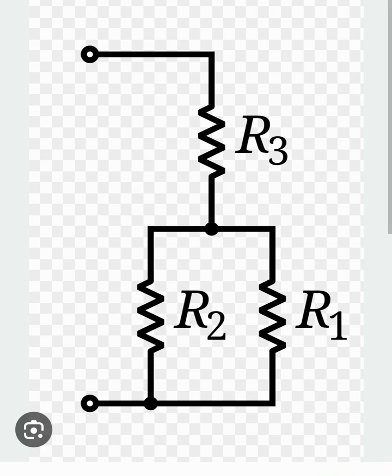Can you tell the equivalent resistance or effective resistance of this network? Let's say this is point A, this is point B, and you are asked to determine the effective resistance across point A and B.